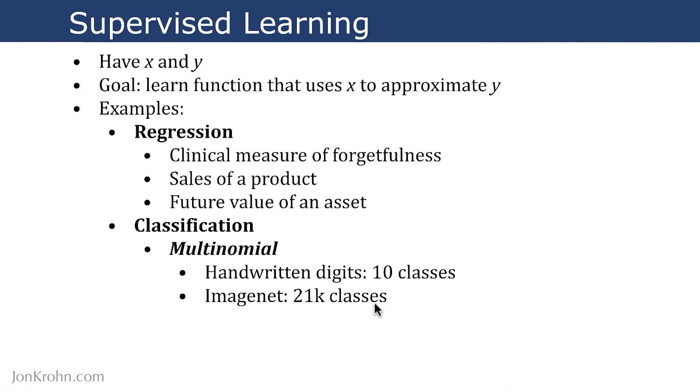So if you build a machine vision algorithm, say a deep learning algorithm, to predict what an image is in the ImageNet data set, it could be any one of 21,000 classes. So many different classes in the problem there.